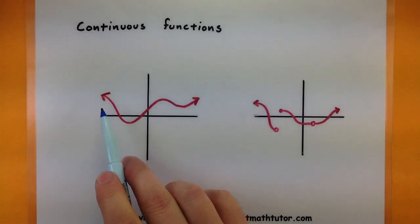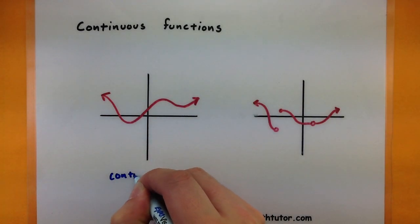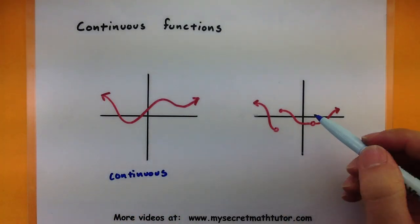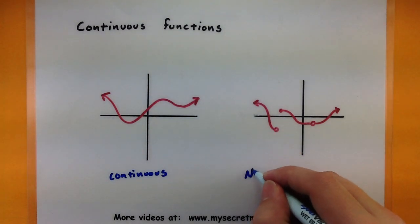You see if you have a function that has no gaps or no breaks then you can call it a continuous function. However if you have stuff like holes or giant leaps in the graph itself then you can say it is not continuous.